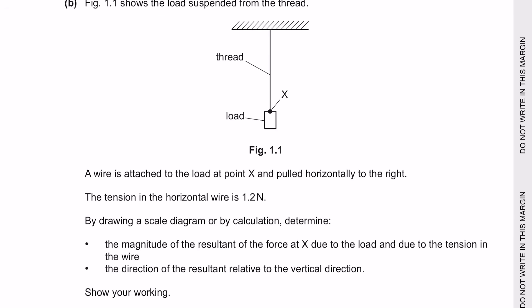Next, question part B. Figure 1.1 shows the load suspended from the thread. A wire is attached to the load at point X and pulled horizontally to the right. The tension in the horizontal wire is 1.2 newtons. By drawing a scale diagram or by calculation, determine the magnitude and direction of the resultant force at X.